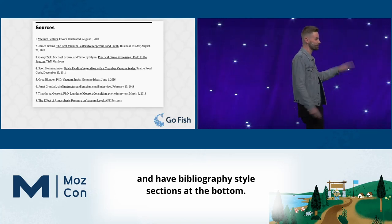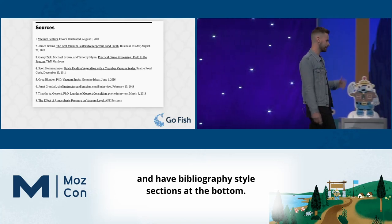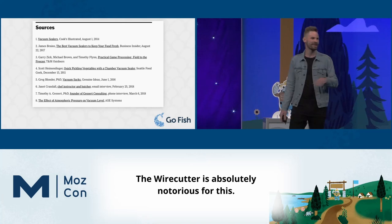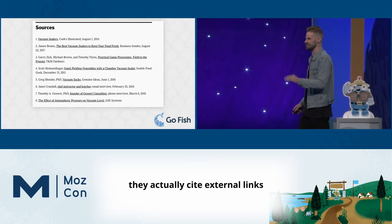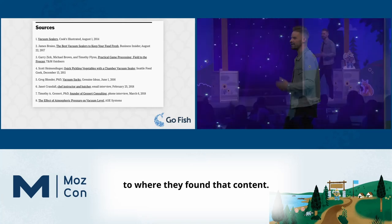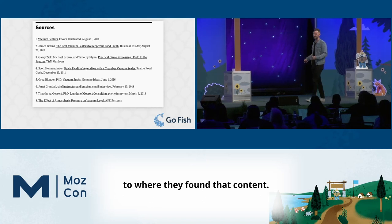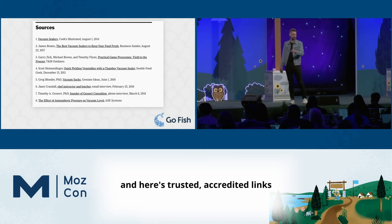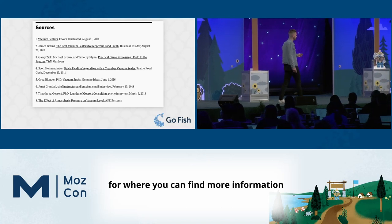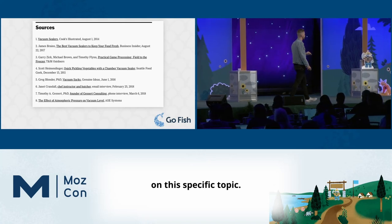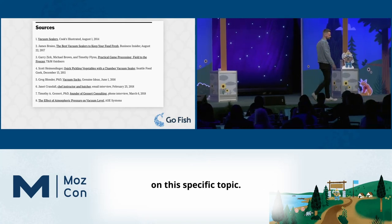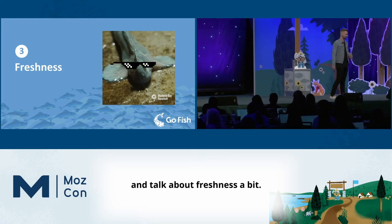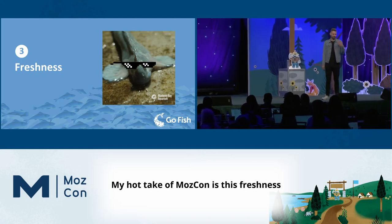Another way to improve the trustworthiness of your content is to take it back college-style and have bibliography-style sections at the bottom. The Wirecutter is notorious for this — any time they cite a fact, they cite external links to where they found that content. This shows that they're not making up facts, and here are trusted, accredited links where you can find more information on a specific topic.